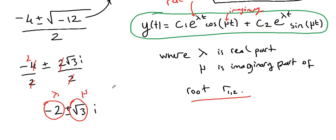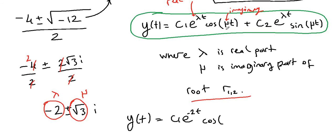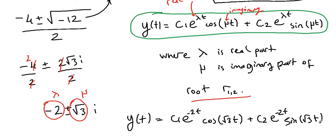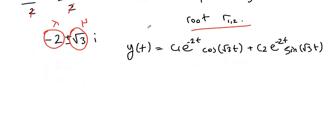Now, our λ is negative 2, because λ is the real part of the roots, and μ is √3. We can plug these into our general solution formula: y(t) equals c1·e to the negative 2t cosine(√3·t) plus c2·e to the negative 2t sine(√3·t). This is our general solution.